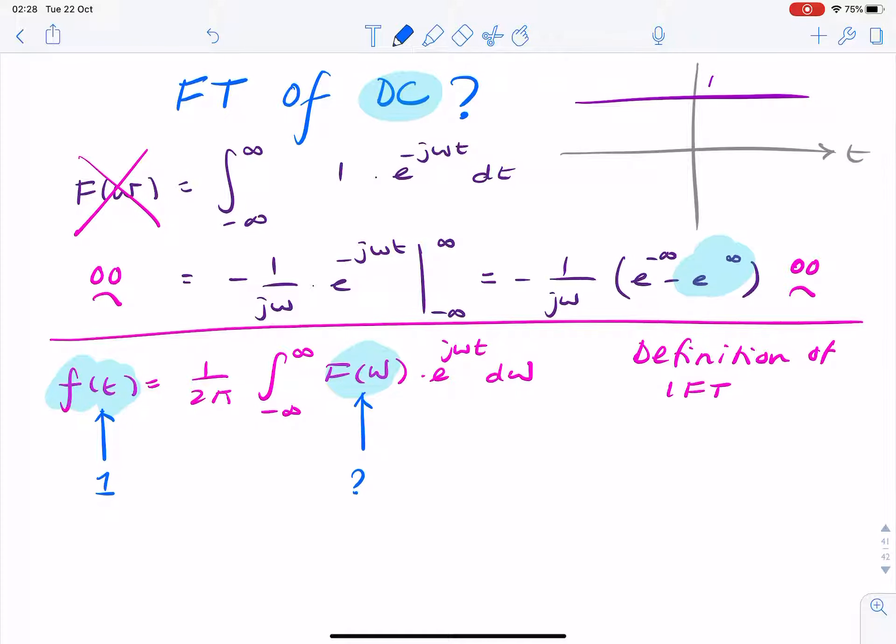So what do I put in here that when integrated, multiplied by an exponential, will give me 1? Well, we can exploit the sifting property of the delta Dirac function.